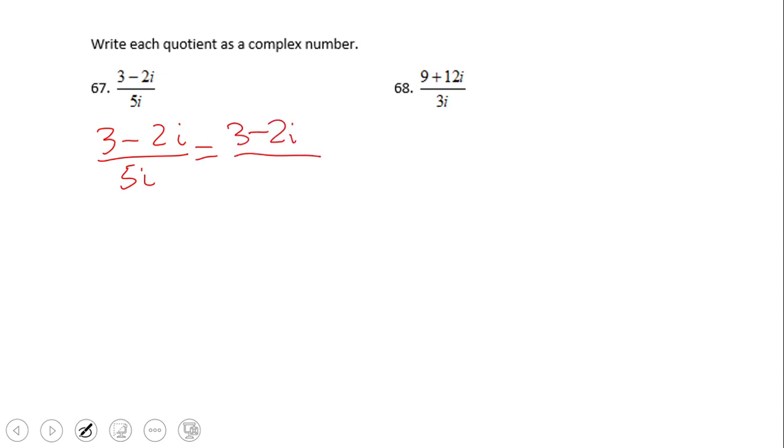Instead of dividing complex numbers like the problem says, we're going to multiply. Now be careful what you multiply by. In this case, we multiply by i over i. This is nothing else than the number one, right? So we can multiply by one because in fact we change nothing. And what do we get here? We have 3 times i which is 3i, 2i times i which is 2i squared, and down on the bottom denominator becomes 5i squared. And do not forget that i squared is nothing else than negative one.